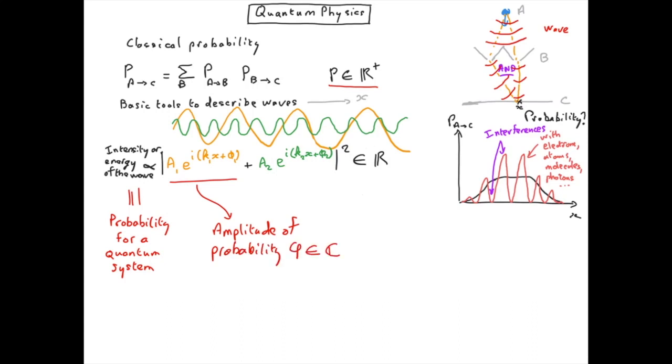But we see that in the case of wave what we have to sum is the amplitudes and eventually we take the modulus squared in order to find the intensity.